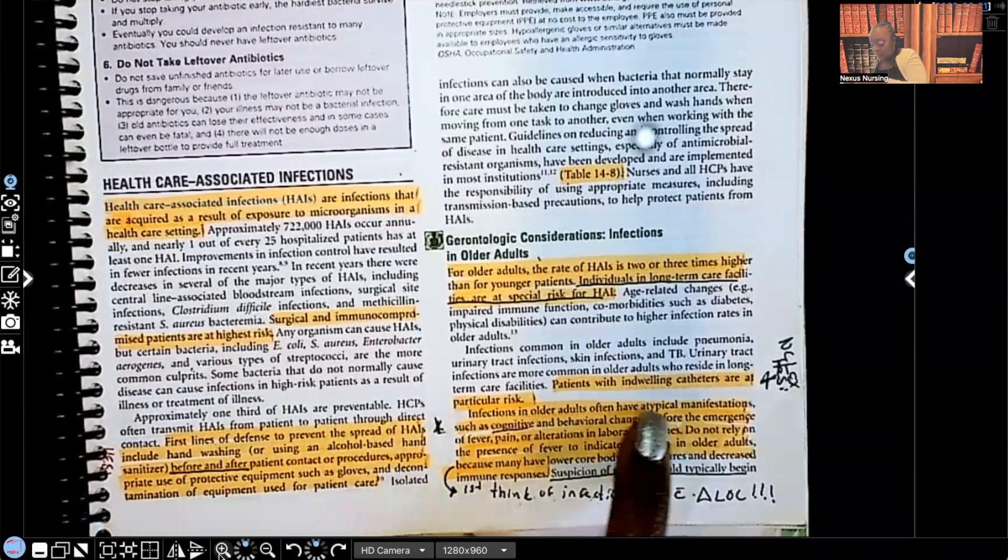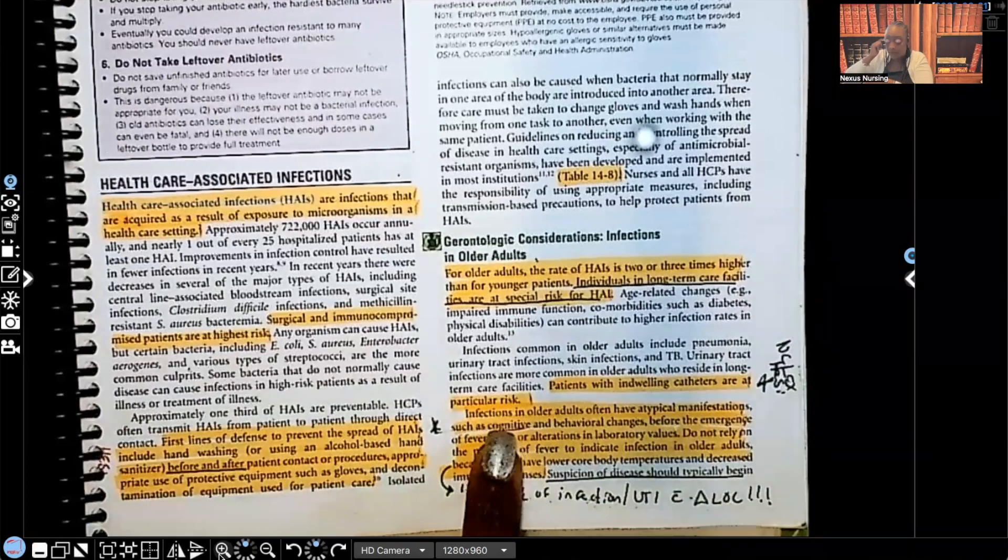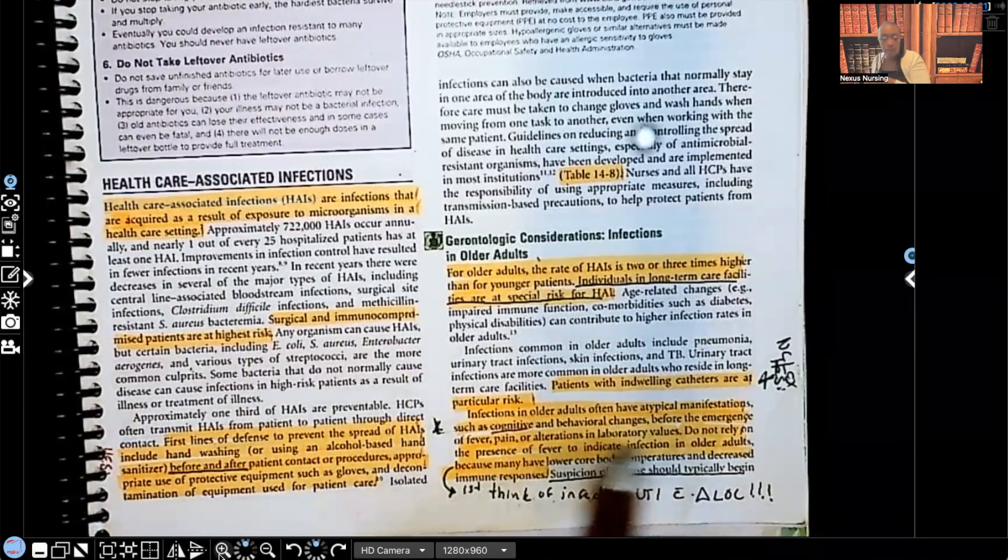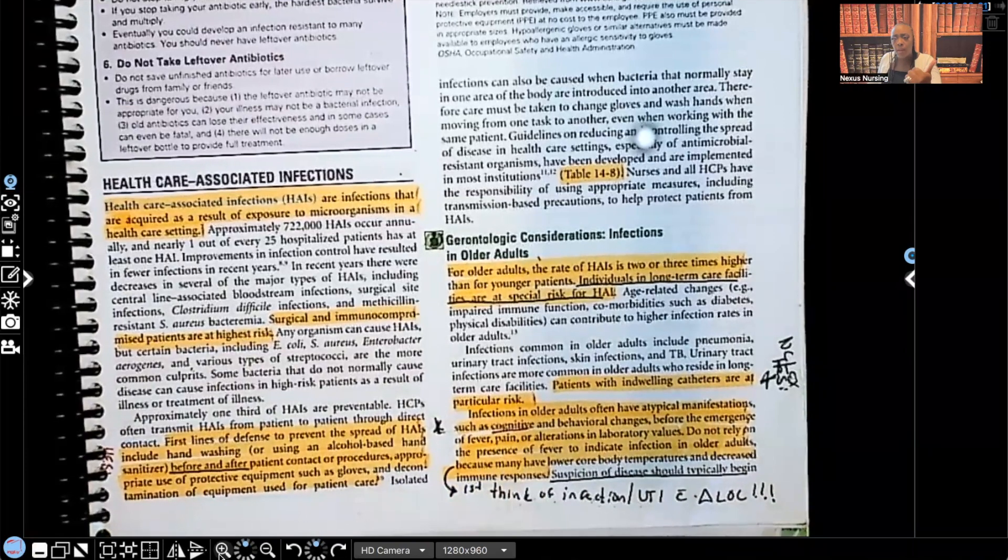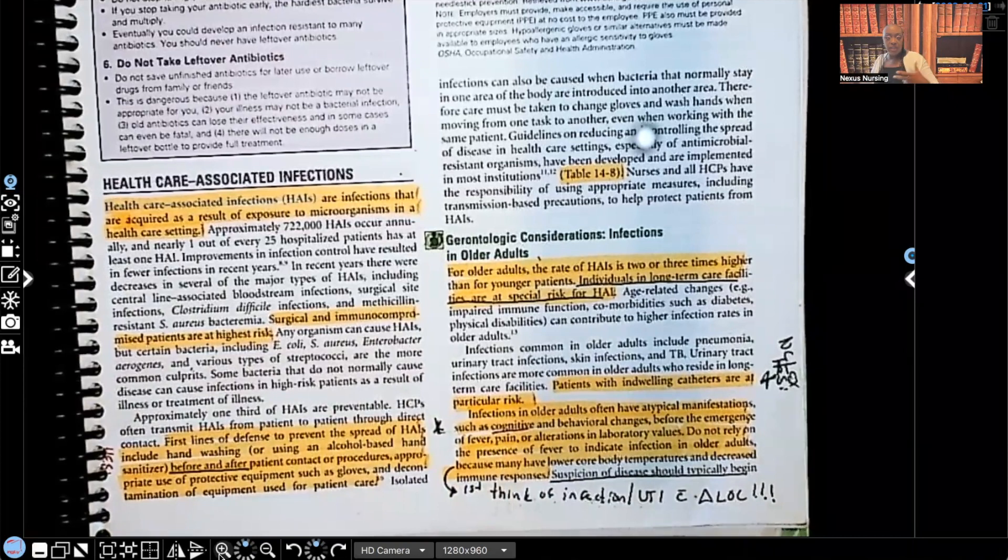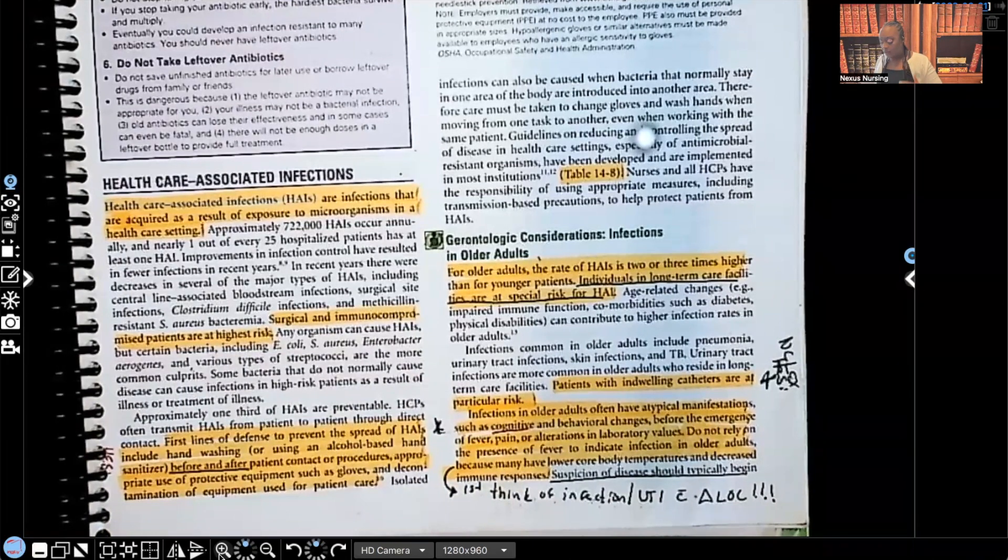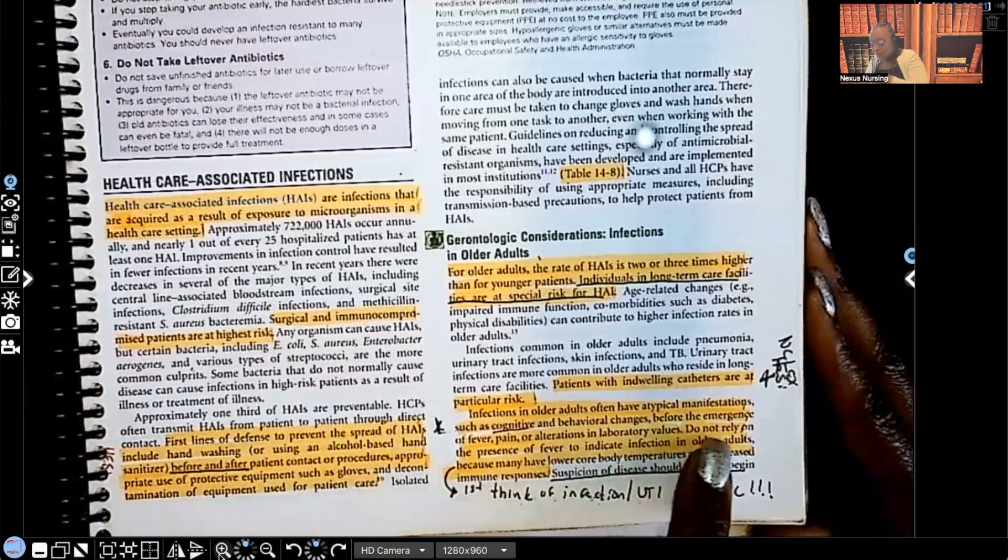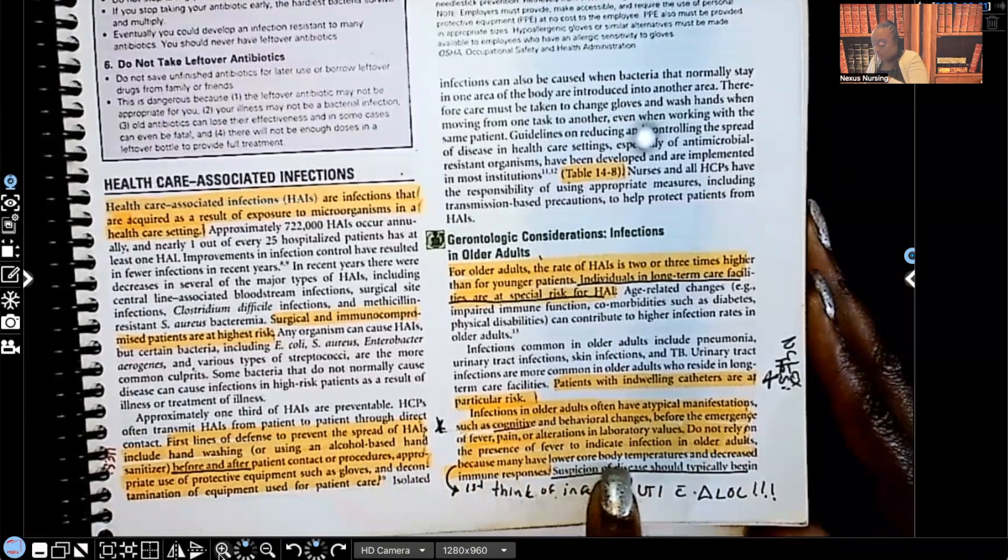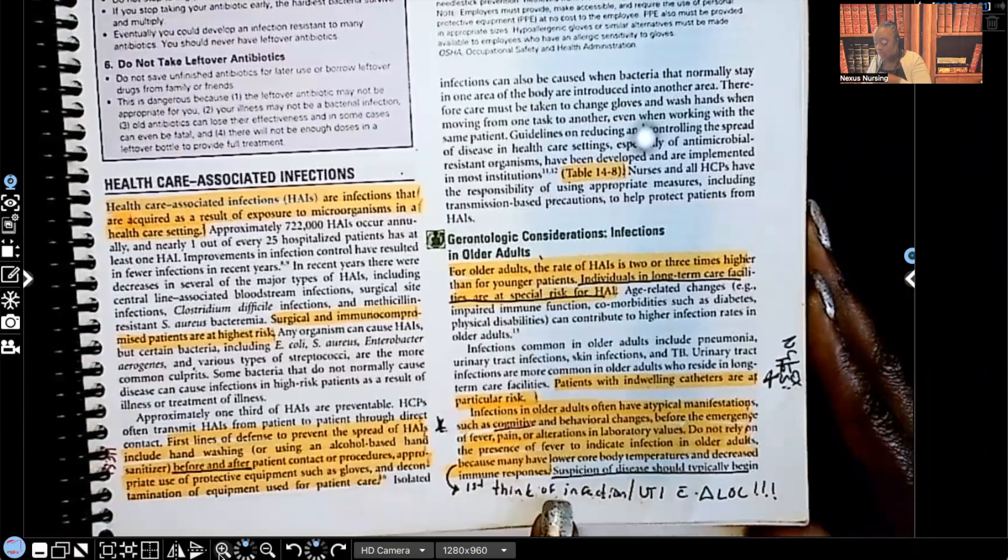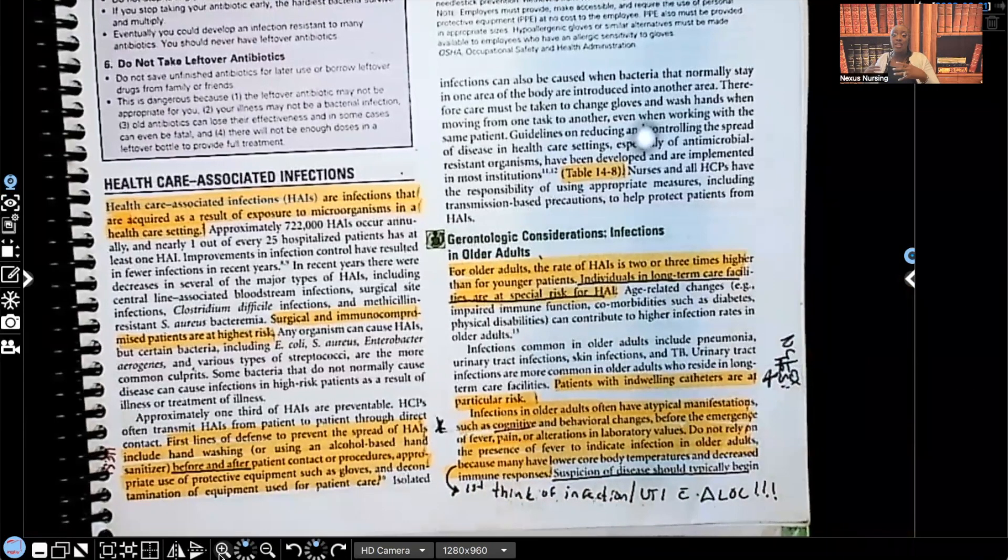Infections in older adults have atypical manifestations such as cognitive and behavioral changes before the emergence of fever, pain, alterations of lab values. So before we're seeing the temperature start to go up, pain, differences in labs, what we're going to see is a change in the way that they think. That's their cognitive function and the way that they behave. If they start behaving erratically out of their character, right? Normally that's a sign and symptom of infection of the older adult.